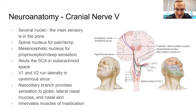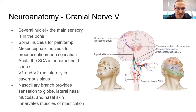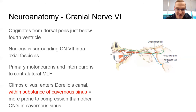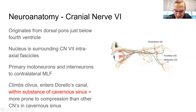Cranial nerve 5: V1 and V2 go through the cavernous sinus — you might recall the mnemonic for the foramina those pass through. Cranial nerve 6 is in the substance of the cavernous sinus, making it more vulnerable to compression. It initiates horizontal gaze through the medial longitudinal fasciculus.